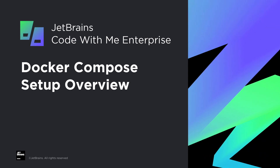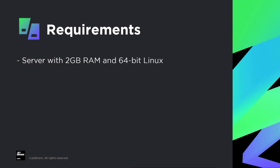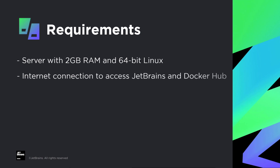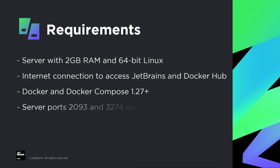Before we get started, you'll need a few things. For the installation you will need a server with at least 2GB of RAM and a 64-bit Linux distribution. You must have an internet connection with access to JetBrains services and Docker Hub. You will need Docker and Docker Compose 1.27 or above. Ports 2093 and 3274 on the server should be open in the server firewall. These are going to be used by the lobby and relay servers.